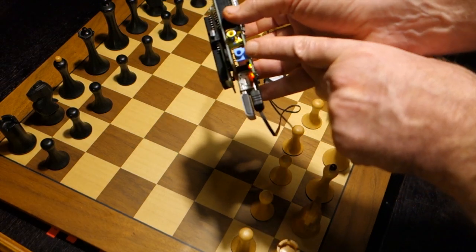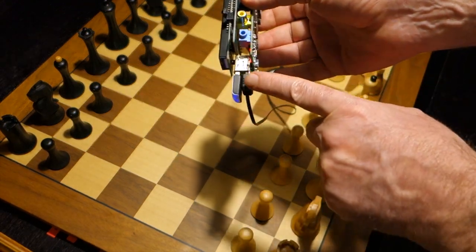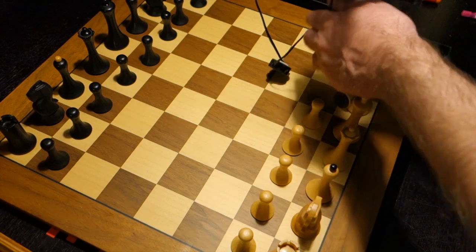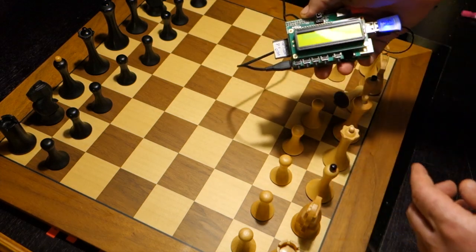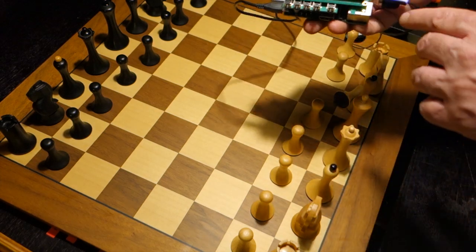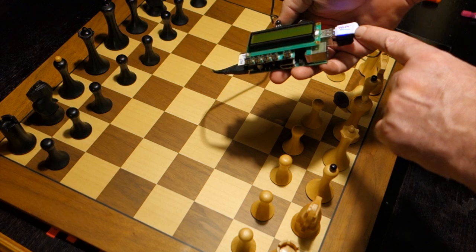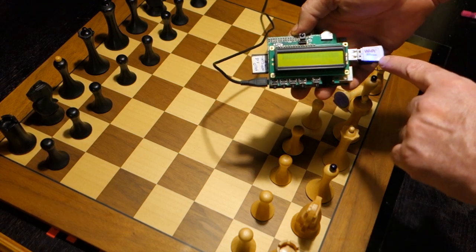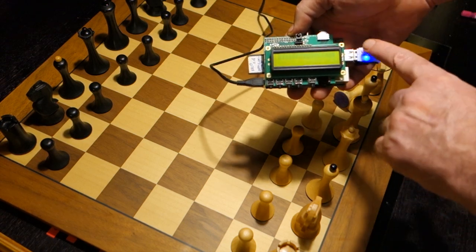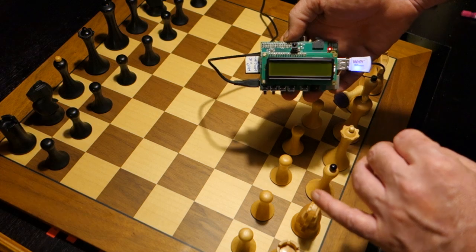The Raspberry is connected via USB to my DGT chess board. And here I have a Wi-Fi dongle. It is very useful. We will soon see why.